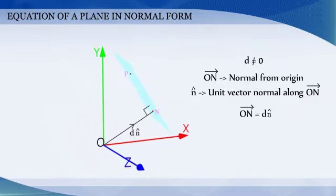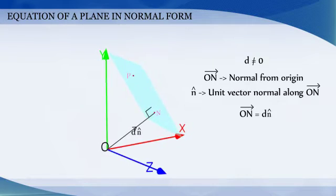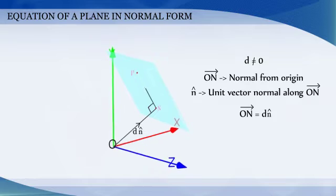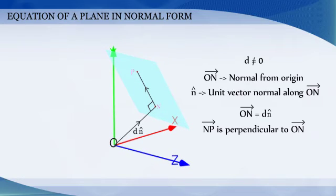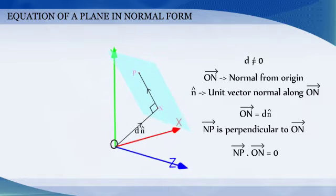Let P be any point on the plane. Then vector NP is perpendicular to vector ON. Therefore, their dot product is 0. That is, vector NP dot vector ON is equal to 0.